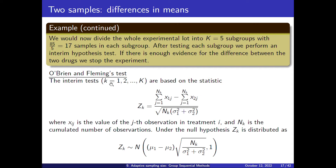Let us number the interim test as k, so from 1 to capital K. At each stage we compute a statistic Z_k, which is simply the sum of all the responses up to that stage in both groups. We compute the difference, and if there is not a lot of difference, this subtraction will give a value close to zero. It is then normalized, and if the null hypothesis is true, this statistic is distributed with mean zero and standard deviation one.